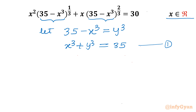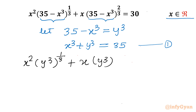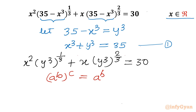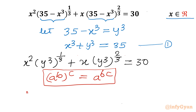Now I will apply our substitution to the original equation. So I can write x squared times (y cubed) to the power 1 over 3, plus x times (y cubed) to the power 2 over 3, equal to 30. Now I will use the exponent law which states that (a to the power b) to the power c equals a to the power b times c. Using this property, we can simplify our equation.